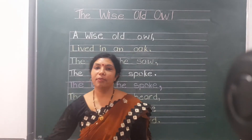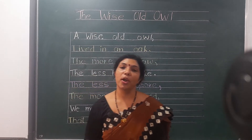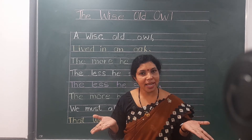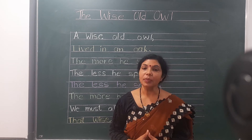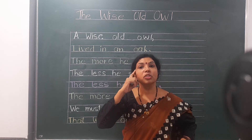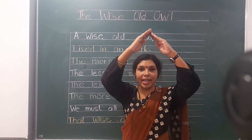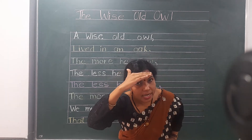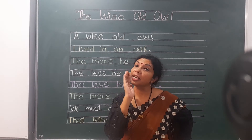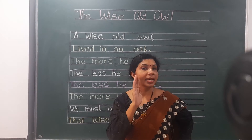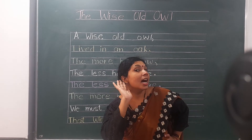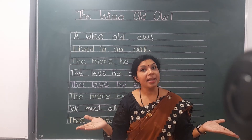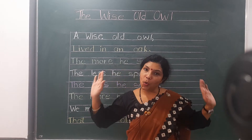Now we will do this rhyme with action — so stand up on your place. A wise old owl lived in an oak. The more he saw, the less he spoke. The less he spoke, the more he heard. We must all be like that wise old bird.